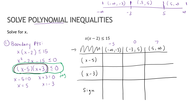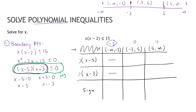If I plug in negative 5 to x minus 5, I get negative 10 — that's negative. For x plus 3 — I had written x minus 3 earlier, but it should be x plus 3, sorry — negative 5 plus 3 is still negative. So both entries for the first interval are negative. Now for test point 0: plugging into x minus 5 gives negative 5, which is negative. Plugging into x plus 3 gives positive 3, which is positive.